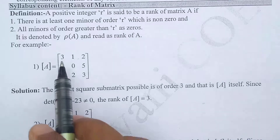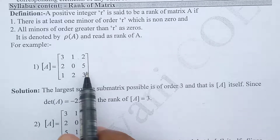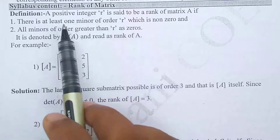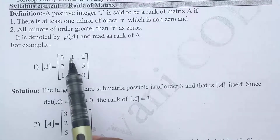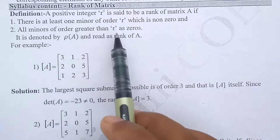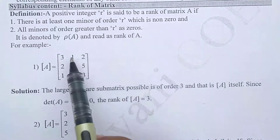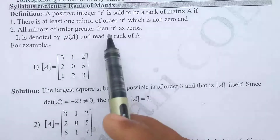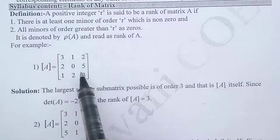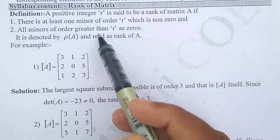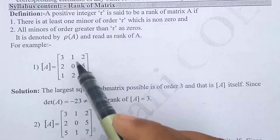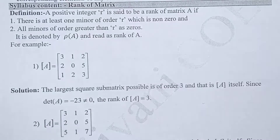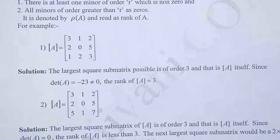Since the determinant is −23, which is non-zero, there is at least one minor of order 3 which is non-zero. For minors of order greater than 3 (i.e., order 4, 5, etc.), none exist, so that condition is automatically satisfied. Therefore r = 3 satisfies both conditions, and the rank of this matrix is 3.